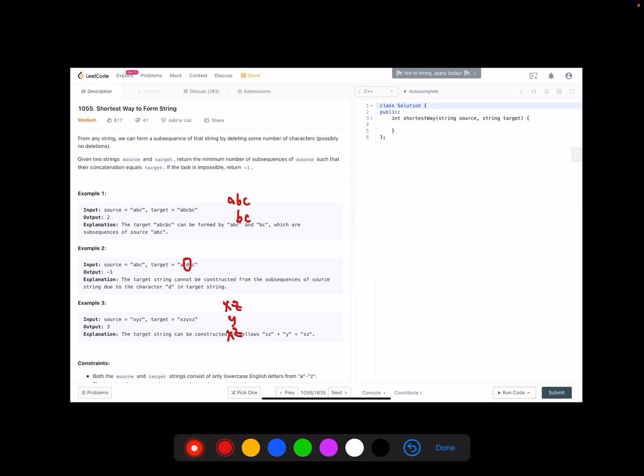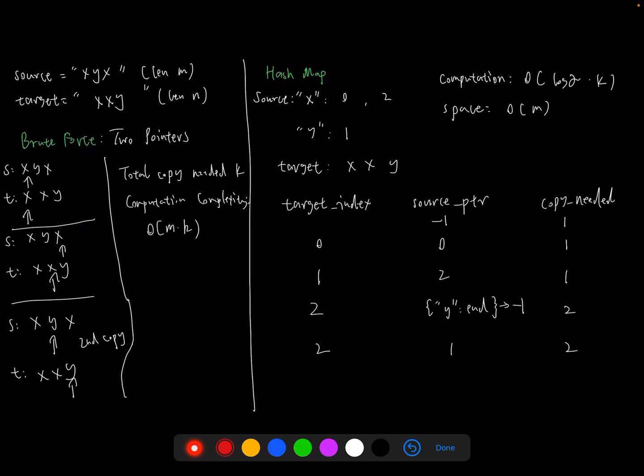Let's look at the slide first. If we assume the source length is M and target length is N, of course we can use two pointers as a brute force problem. One pointer is to iterate from the source to the end and another pointer to iterate from the target to the end.